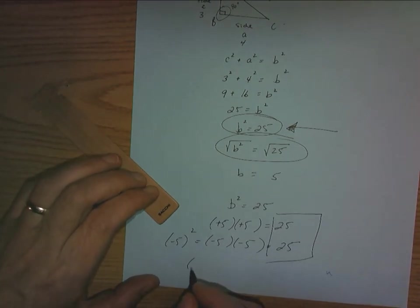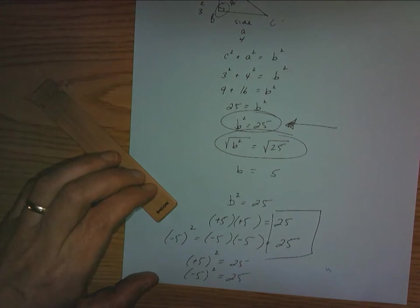In other words, if I put 5 and square it, I get 25. And if I put in negative 5 and square it, I also get 25. That's the math.